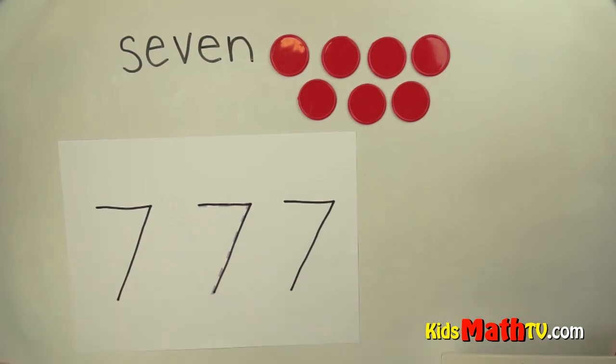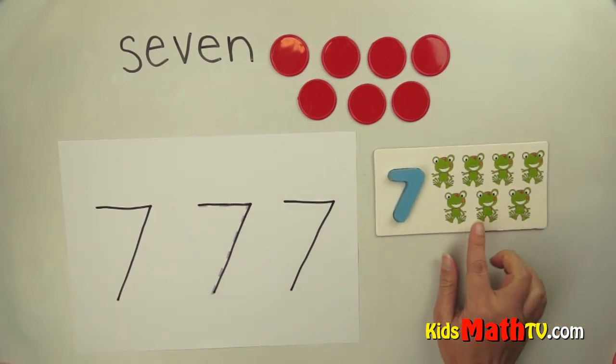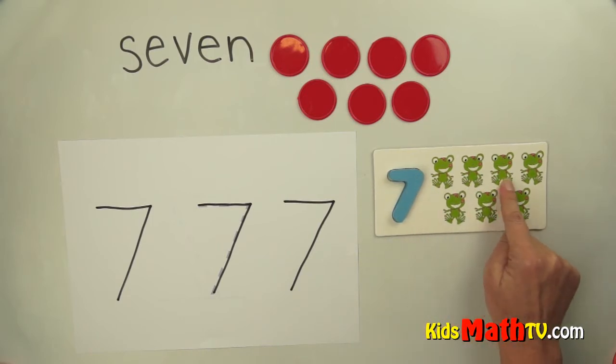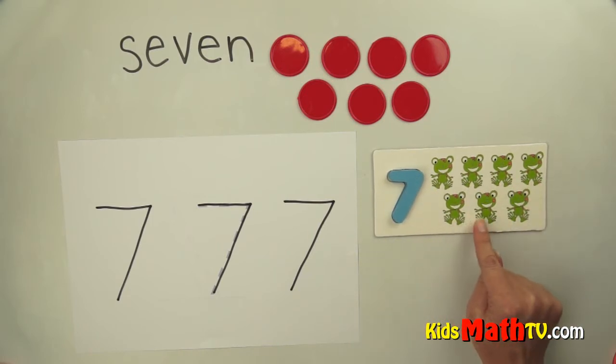Here are some other examples of seven. Here are seven frogs. One, two, three, four, five, six, seven. Seven.